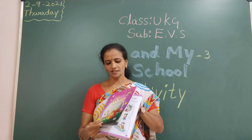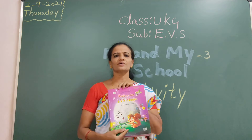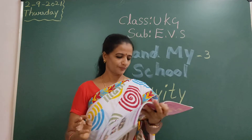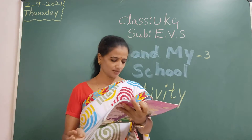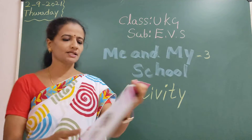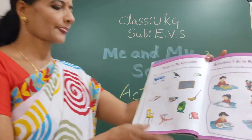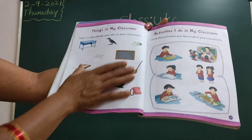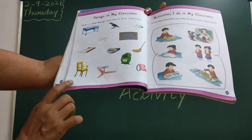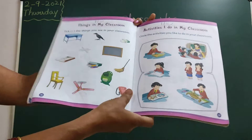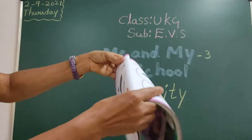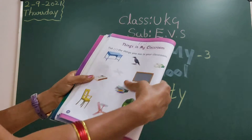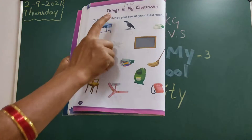So children, take out your EVS book. Page number 30. This is homework for you. So here, this page — page number 30. Everyone open to page number 30.